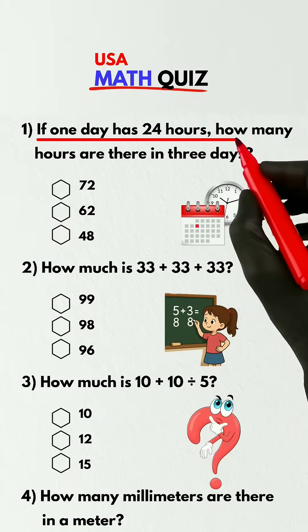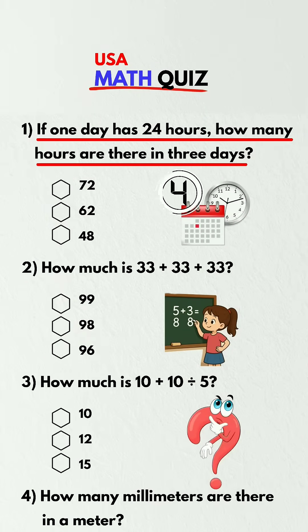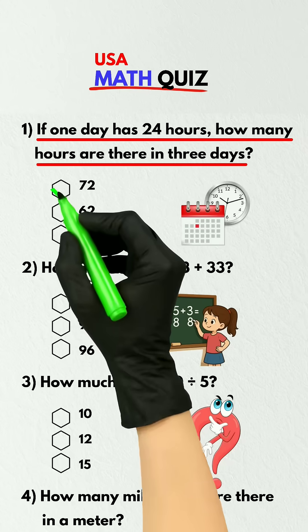If one day has 24 hours, how many hours are there in three days? 72.